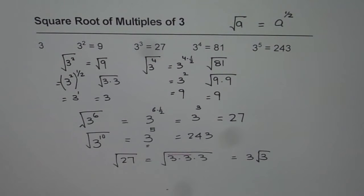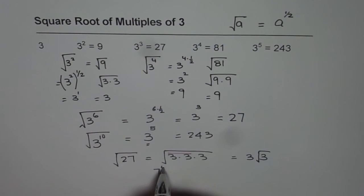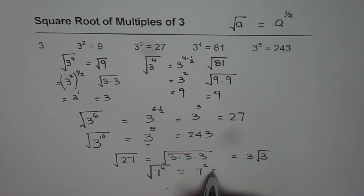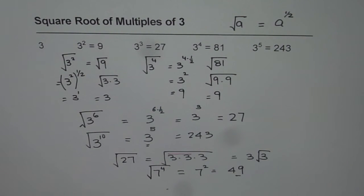I hope you learned in this video how to find square root of powers of 3. You can extend this to powers of any number whatsoever. For example, if you have 7 to the power of 4, you can write the answer as 7 squared, which is 49. You can use this strategy to find square root of any number when it is given in the form of exponents or multiples. I hope that helps. Thank you.